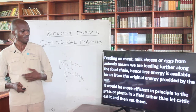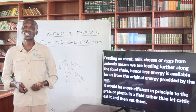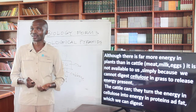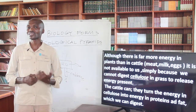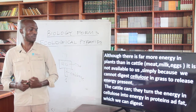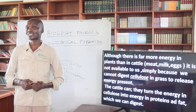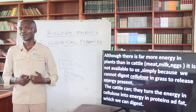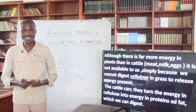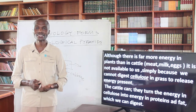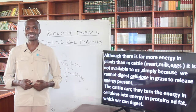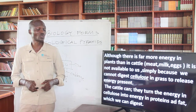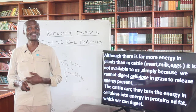Because essentially, we are bound to obtain less energy from one level to the other. Although there is far more energy in plants than in animal products like meat, milk, and eggs, it is not available to us simply because human beings cannot digest cellulose, which is present in grass or plant materials. However, domestic animals like cattle can digest cellulose and therefore turn the energy in plant fiber into energy stored in the form of protein and fat, which we can consume and digest comfortably.